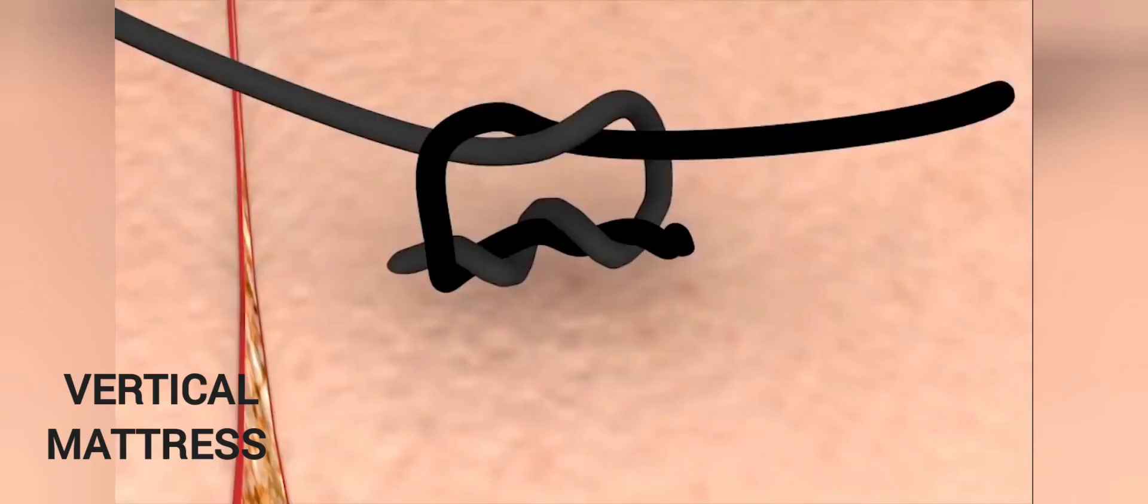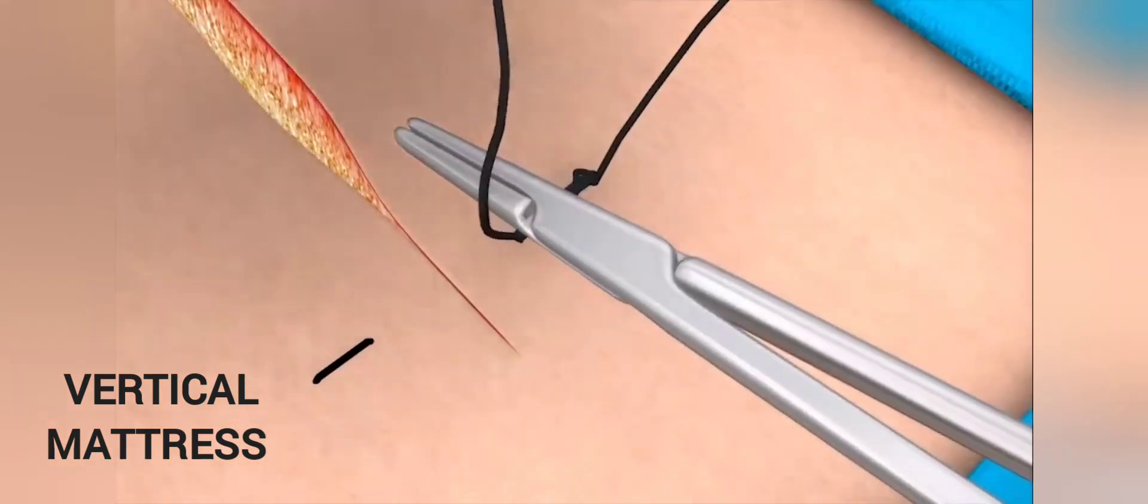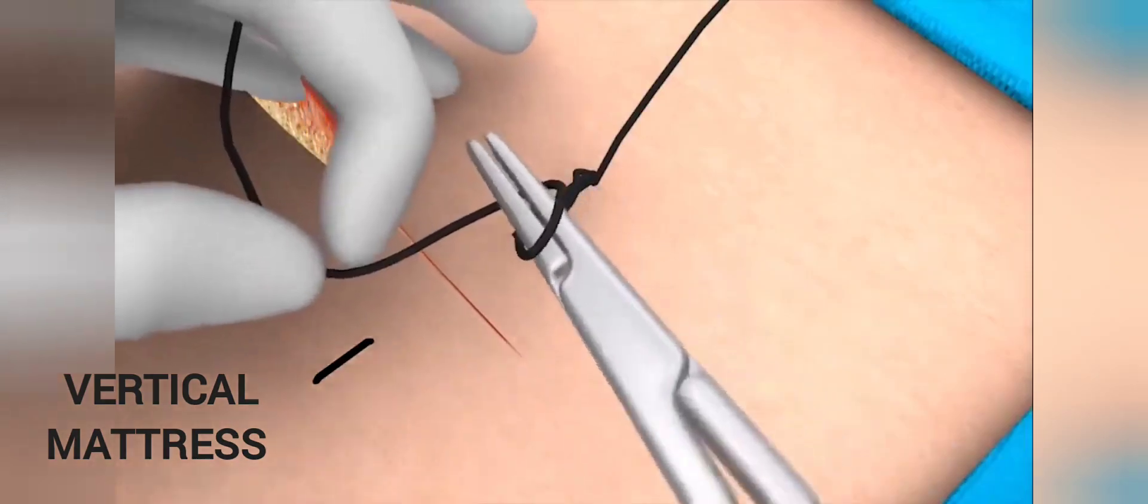And again, the end of the suture is pulled through the loop as it slips off the needle holder. Add a single forward throw in the same way to complete the squared knot.